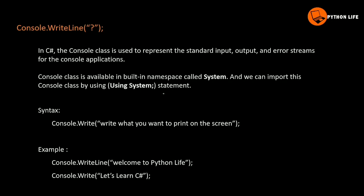Next step is syntax: Console.WriteLine. Write what you want to print on the screen. What you want to print on this statement — you can use the script by double quotes. You can print the output of the data. For example, Console.WriteLine('Welcome to Python Live'). This is the same. Console.Write('Let's Learn C#'). So the two outputs are the same, but the difference is that Write goes to the next line.